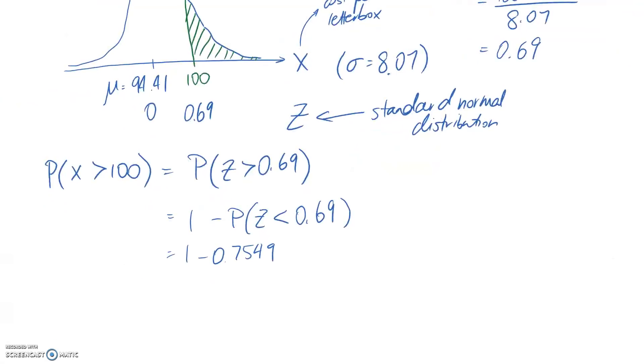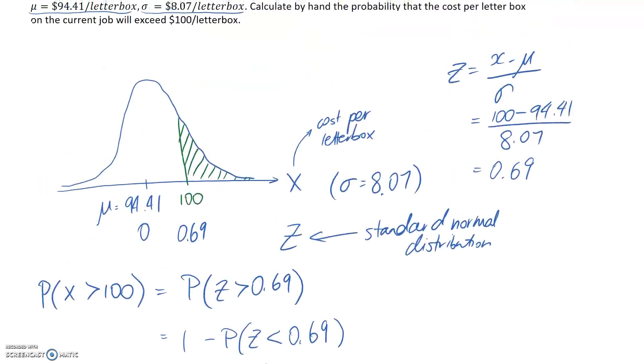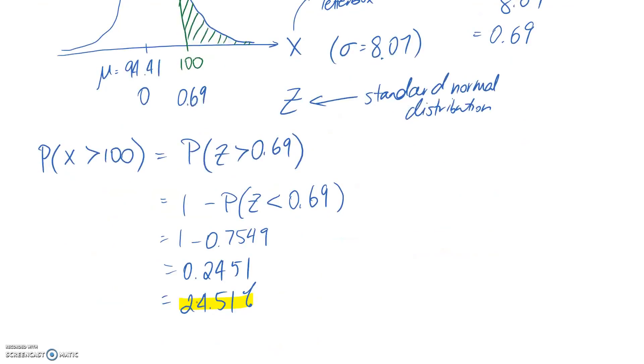If we type that into a calculator, we end up with 1 - 0.7549 = 0.2451, and as a percentage it's about 24.5%. What that's telling us is that the percentage chance of landing in a cost per letterbox more than $100 is about 25%, so quite high actually.